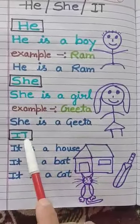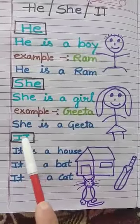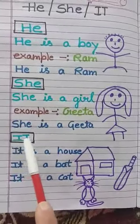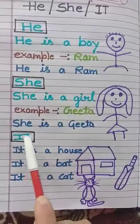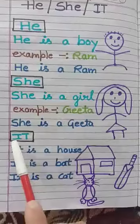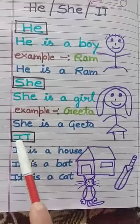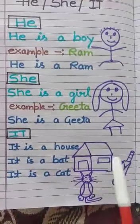It. What is the spelling of it? I, T — it. Now look at the pictures.